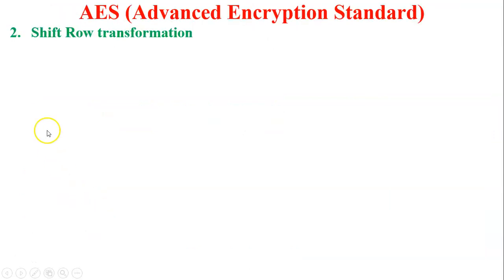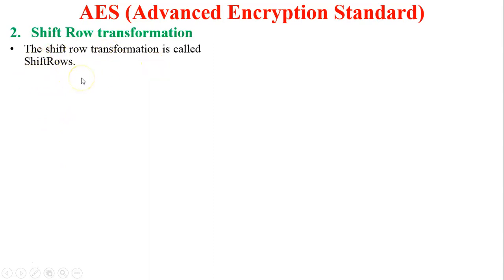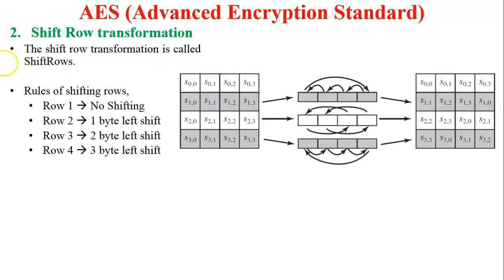Now let's discuss the Shift Row transformation. The Shift Row transformation is called Shift Rows, or permutation of the given numbers or letters. These are the rules of shifting of rows. You can see our state array or state matrix. Row one has no shifting — you can see s[0][0], s[0][1], s[0][2], and s[0][3] remain the same.